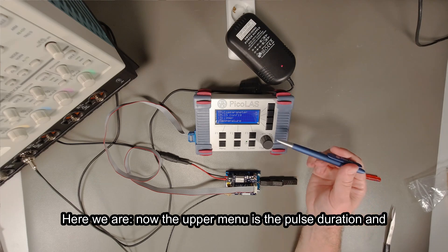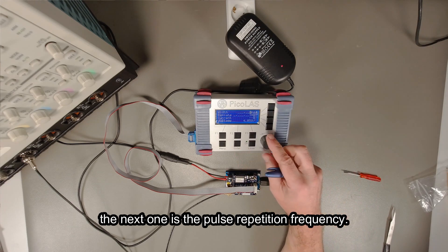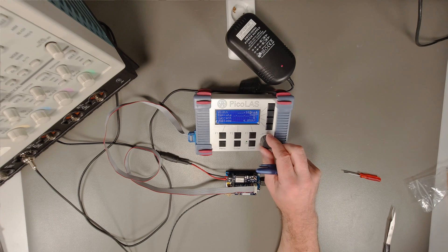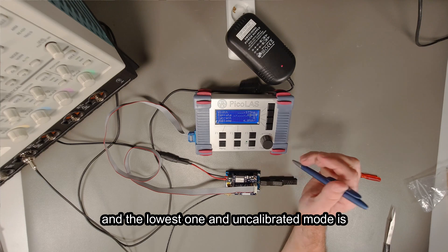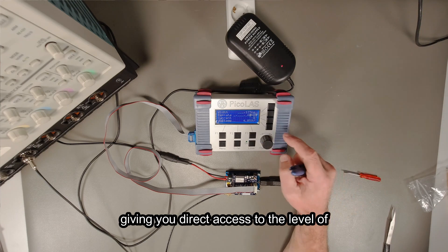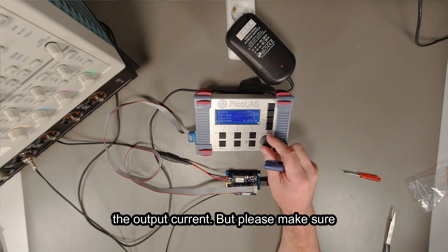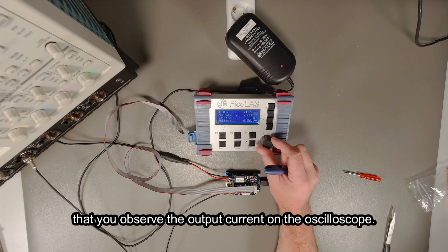The upper menu is the pulse duration. The next one is the pulse repetition frequency. The lowest one in the uncalibrated mode gives you direct access to the level of the output current. But please make sure that you observe the output current on the oscilloscope.